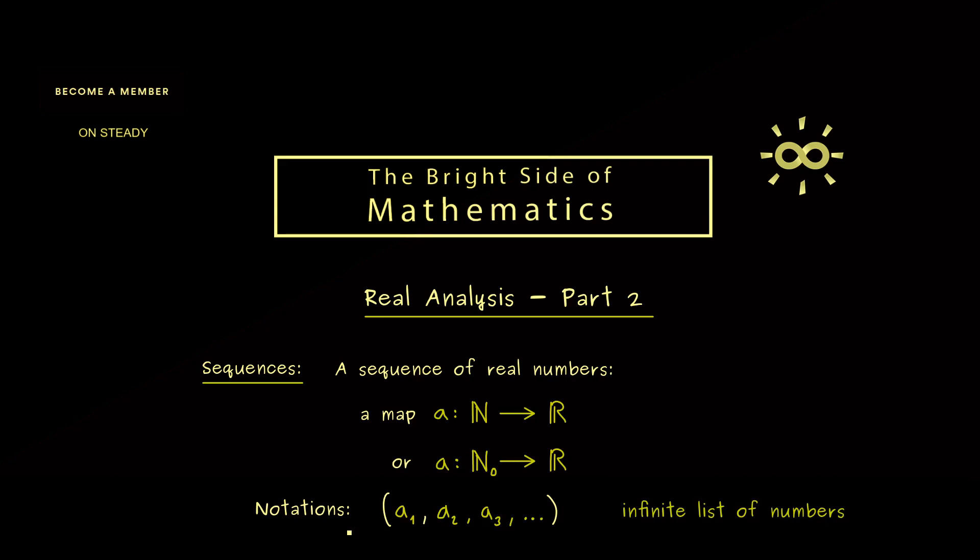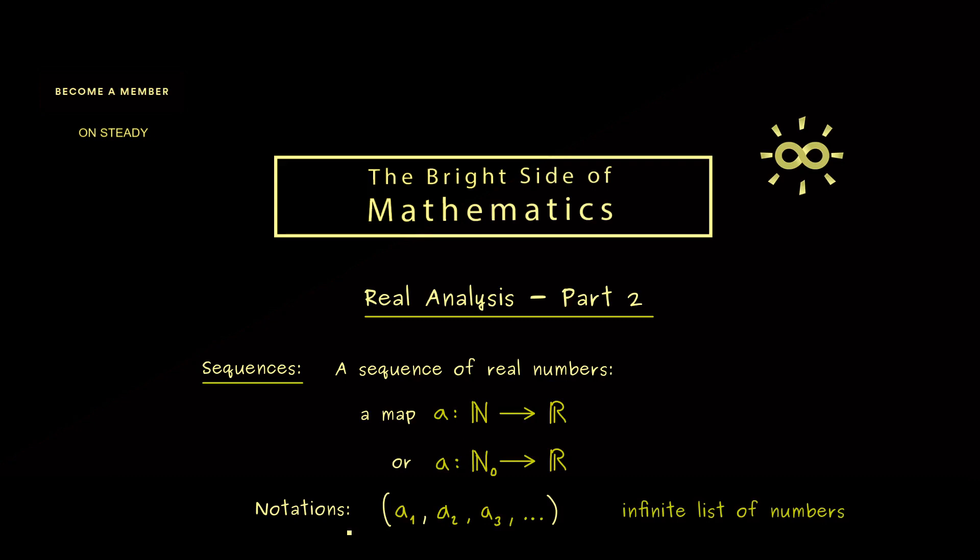Remember formally a sequence is a map, but we'll use shorter notations. For example, what you often see is just aₙ inside parentheses, and to remind you it's an infinite list we put n∈N in the index. If we want to start with 0, we put n∈N₀. Alternatively, we could write (aₙ)ₙ₌₁^∞. If the starting number is clear from context, we can just use the parentheses.